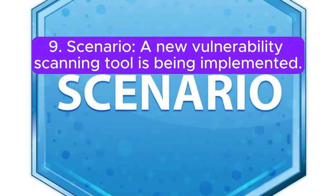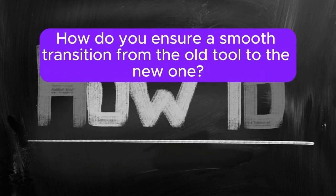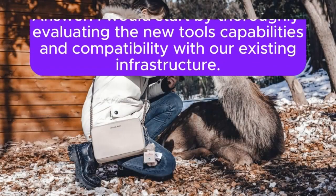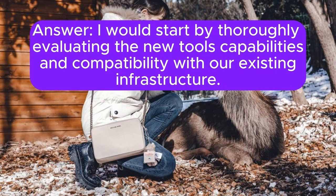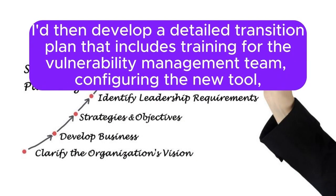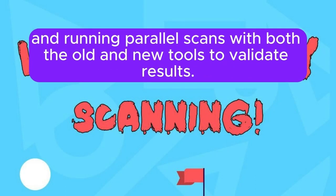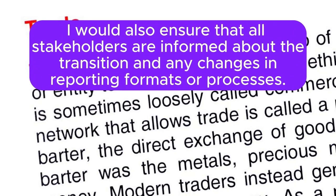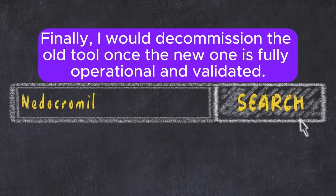Scenario 9: A new vulnerability scanning tool is being implemented. How do you ensure a smooth transition from the old tool to the new one? I would start by thoroughly evaluating the new tool's capabilities and compatibility with our existing infrastructure. I'd develop a detailed transition plan that includes training for the vulnerability management team, configuring the new tool, and running parallel scans with both the old and new tools to validate results. I would also ensure that all stakeholders are informed about the transition and any changes in reporting formats or processes. Finally, I would decommission the old tool once the new one is fully operational and validated.